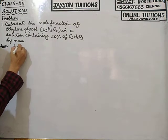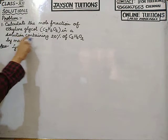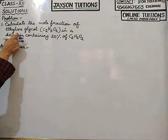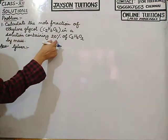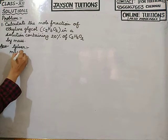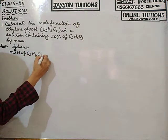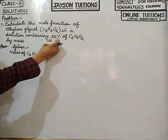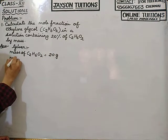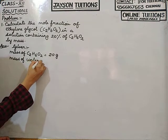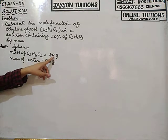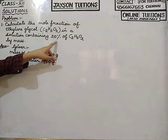What is given: 20% of ethylene glycol C₂H₆O₂ by mass. Solution means ethylene glycol is mixed with water. 20% by mass means the mass of ethylene glycol is 20 grams. So the remaining 80 grams will be the mass of water — 80 grams water and 20 grams ethylene glycol gives a 20% solution.